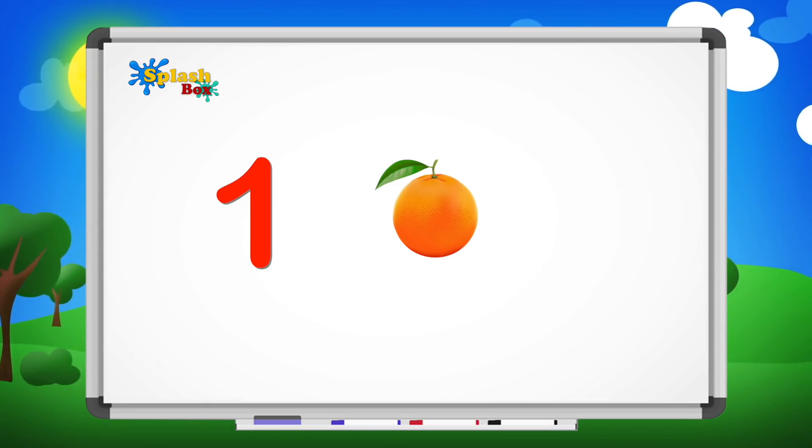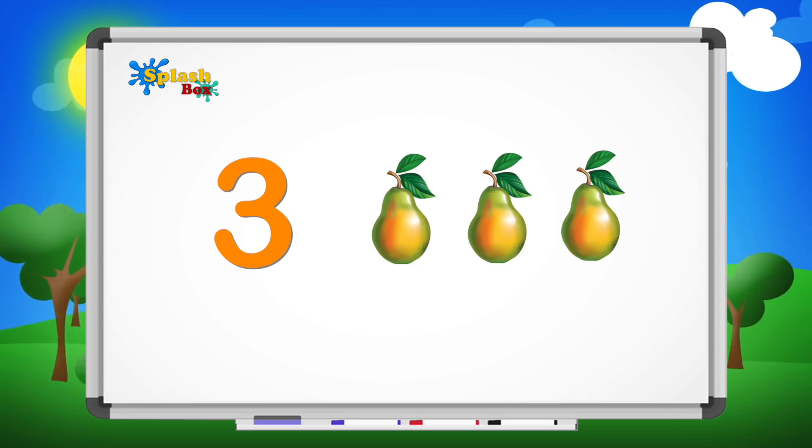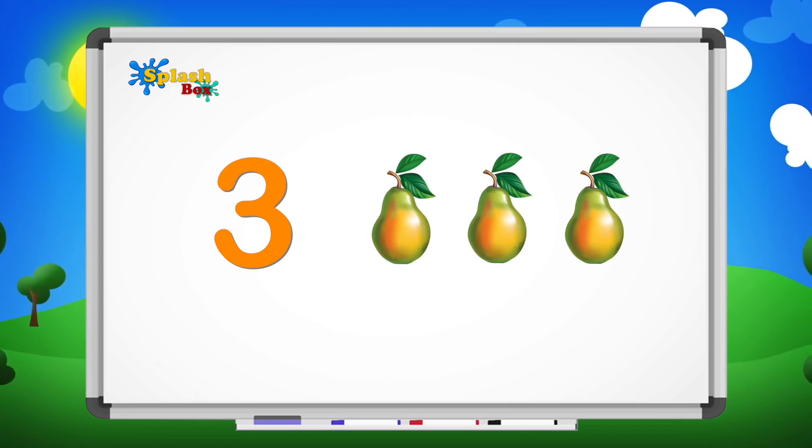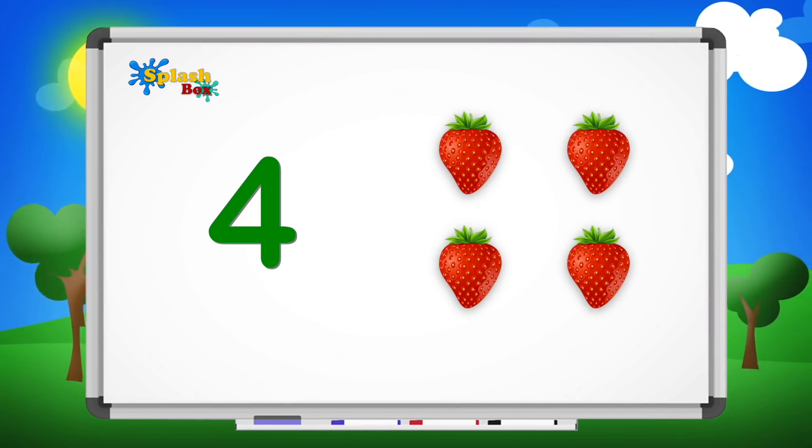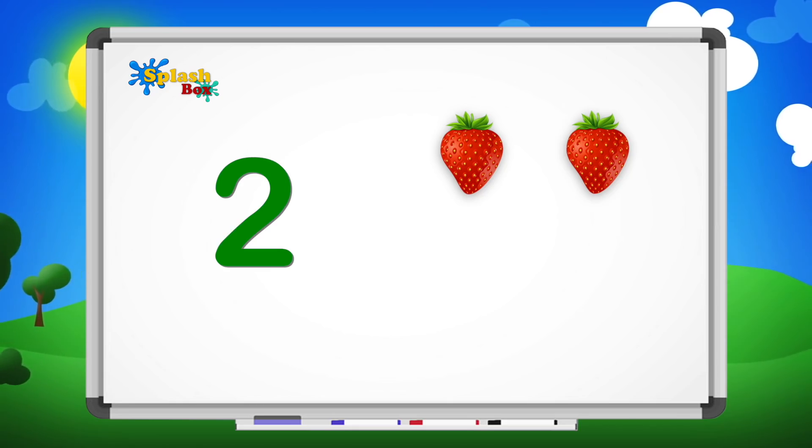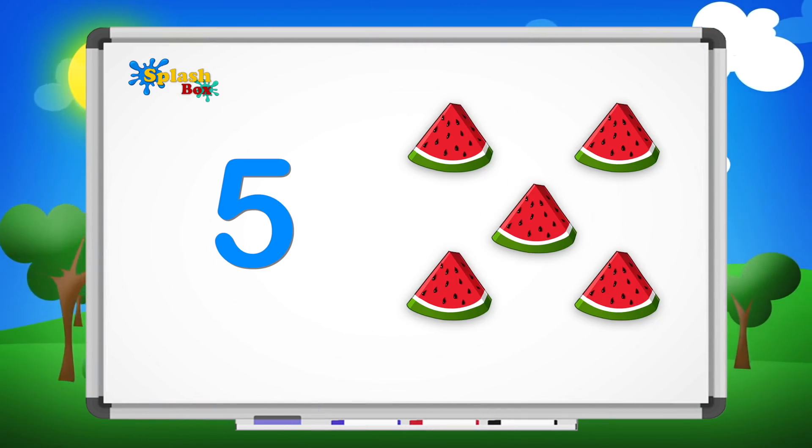Three, three pears, one, two, three, terrific! Four, four strawberries, one, two, three, four, wonderful! Five, five watermelons, one, two, three, four, five, superb!